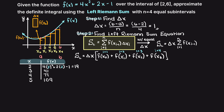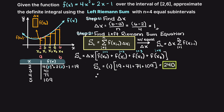Lastly, we now have all the required variables and can solve for the area approximated under our curve here. Therefore, this definite integral is approximately equal to 240, and this is our final answer.